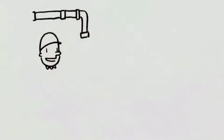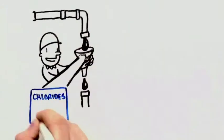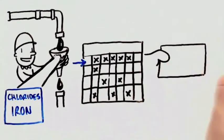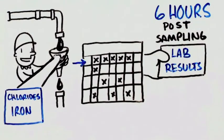The majority of refiners sample at best daily for chlorides and iron, but most sample only one to three times per week. Lab results are sometimes up to six hours post-sampling.